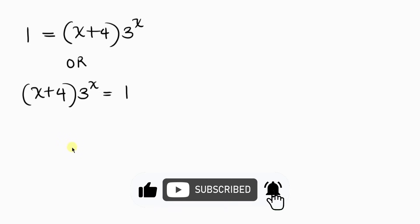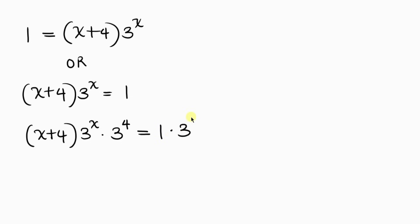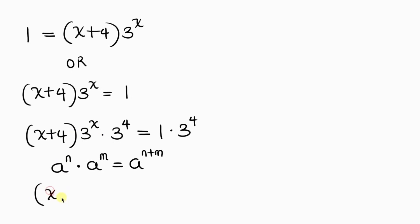Our next step will be to multiply both sides by 3 to the 4. On the left I have x plus 4 times 3 to the x, multiplied by 3 to the 4, equal to 1 times 3 to the 4 on the right. Now applying the law of indices that says a to the n times a to the m equals a to the n plus m, this becomes x plus 4 times 3 to the x plus 4, equal to 3 to the 4, which is 81.